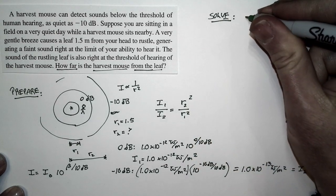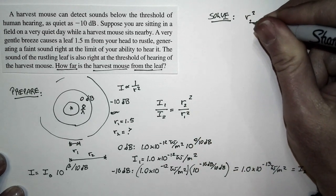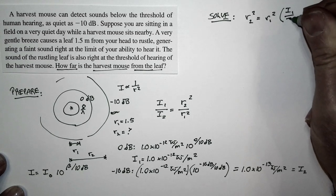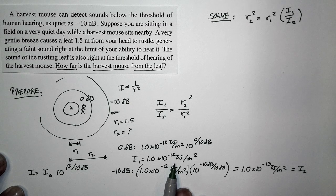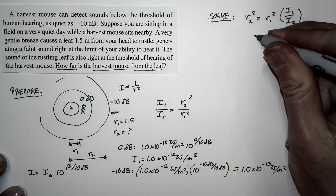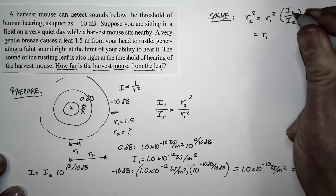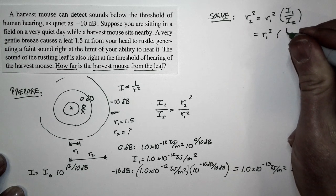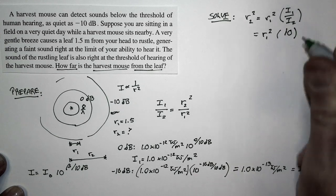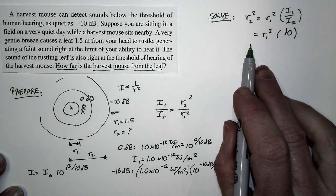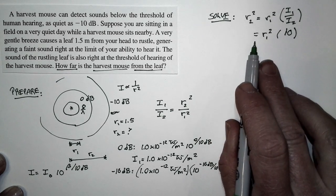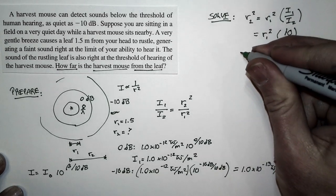We're looking for R2. Rewriting the equation: R2 squared equals R1 squared times I1 over I2. You can hear at I1 = 1×10⁻¹² watts per square meter, and the mouse can hear at I2 = 1×10⁻¹³ watts per square meter. So I1 over I2 is just a factor of 10 — you need a sound 10 times as intense as the mouse to hear it. So R2 squared is bigger by a factor of 10, meaning R2 is bigger by a factor of about 3.